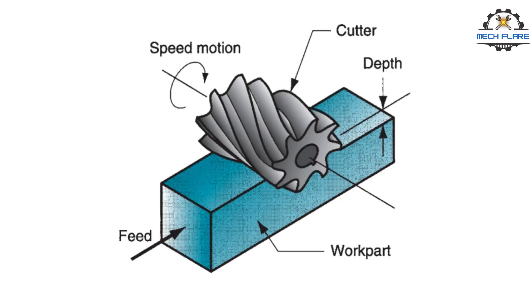Peripheral milling. In peripheral milling, also called plain milling, the axis of the tool is parallel to the surface being machined and the operation is performed by cutting edges on the outside periphery of the cutter.